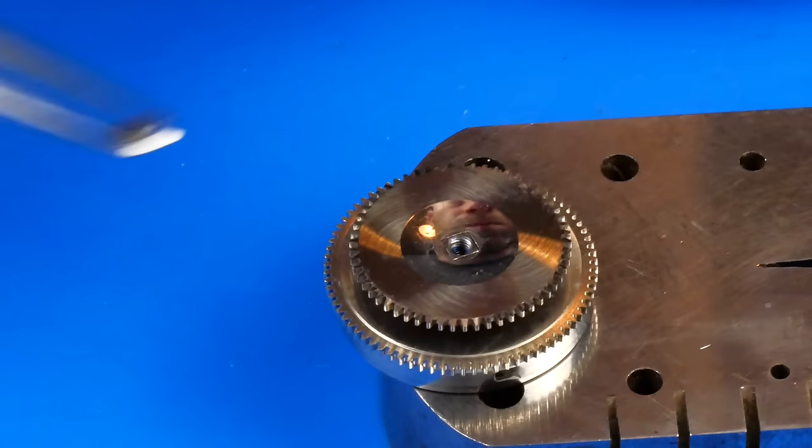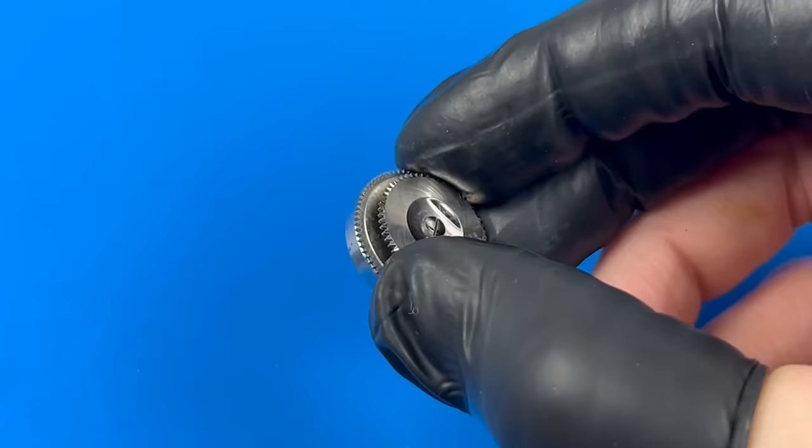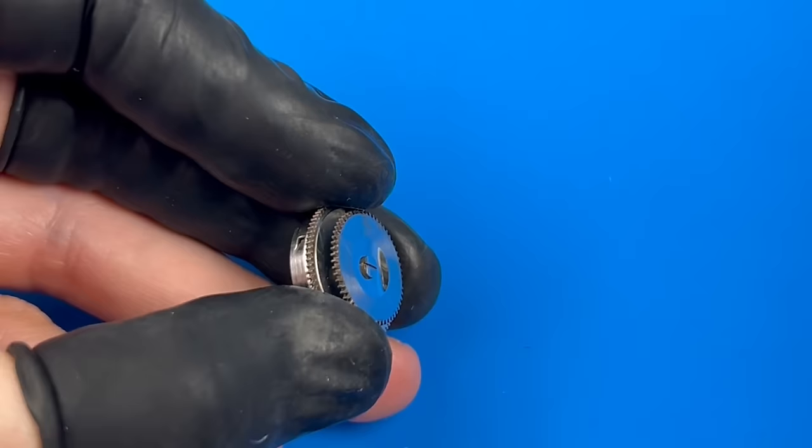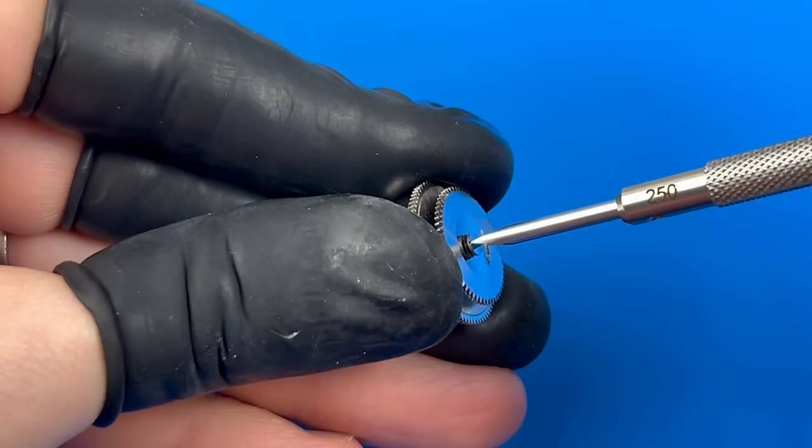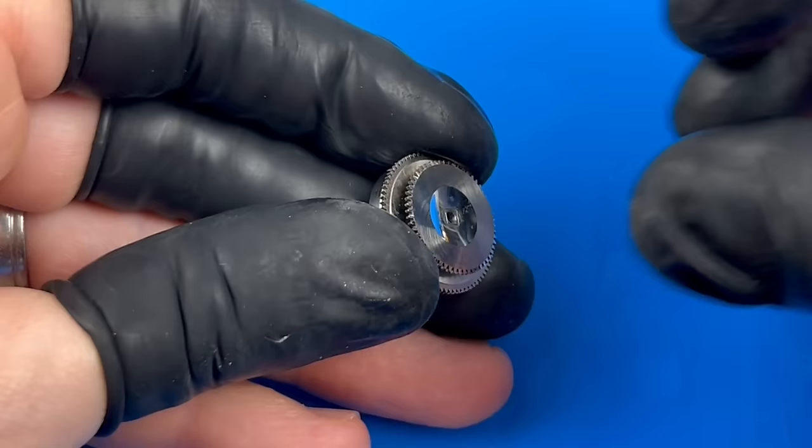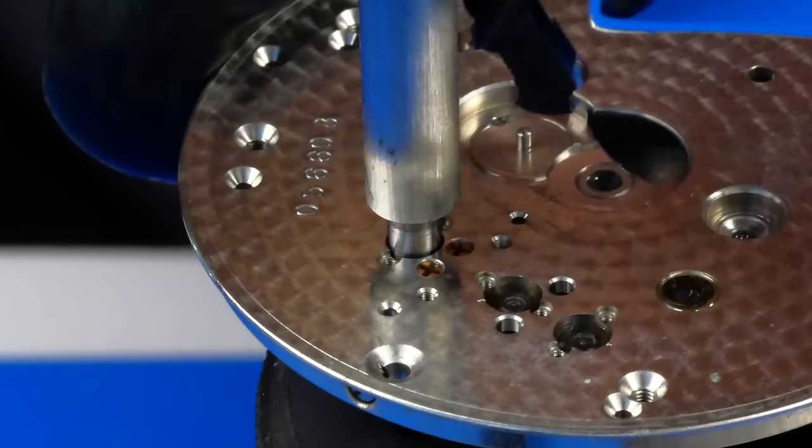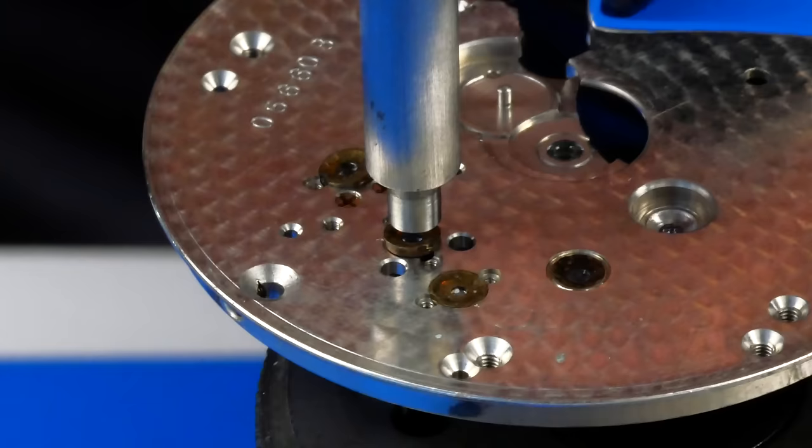The two halves of the barrel are fitted together and then secured using the two part arbor. Once again, I'm using the ratchet wheel to help screw the two halves of the arbor together. Each of the jewel settings removed earlier are now reinstalled into the main plate. These include the jewels for the escape wheel, pallet fork, and the balance.